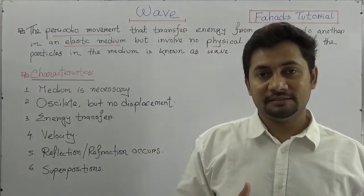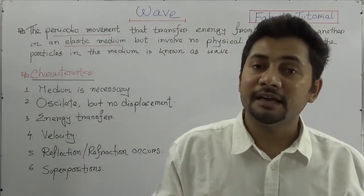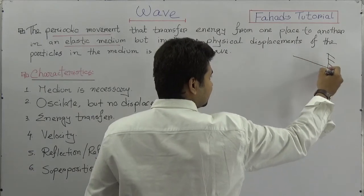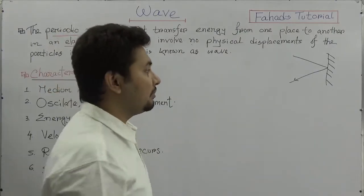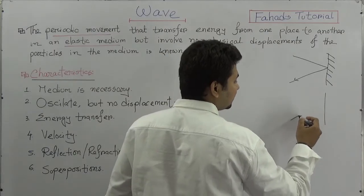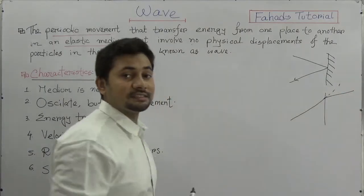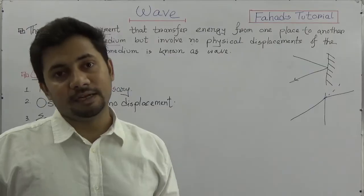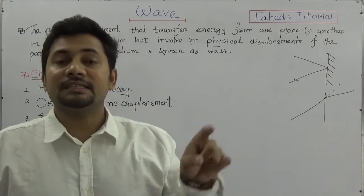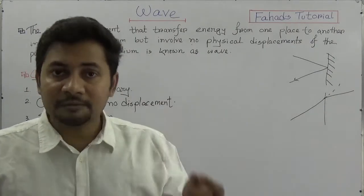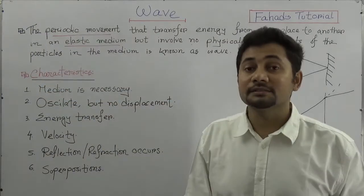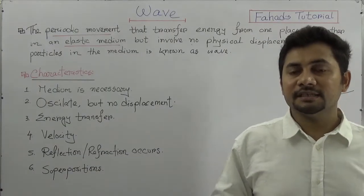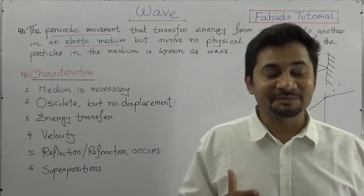Consider light — it is also a wave. So reflection and refraction are another characteristic of waves. Reflection is when light falls on a surface and comes back to the previous medium. Refraction is when light passes into a clear medium but changes its direction. We will study reflection and refraction of light in detail in a following chapter, as they are very important topics in physics.